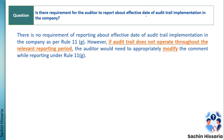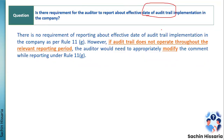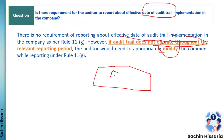Next question: is there a requirement for the auditor to report about the effective date of audit trail implementation? The effective date of audit trail implementation is 1st April 2023. As an auditor, you need to check compliance from 1st April 2023 onwards. There is no requirement to comment on the date of implementation — you just need to verify whether in the financial year being audited, the audit trail feature was enabled throughout.